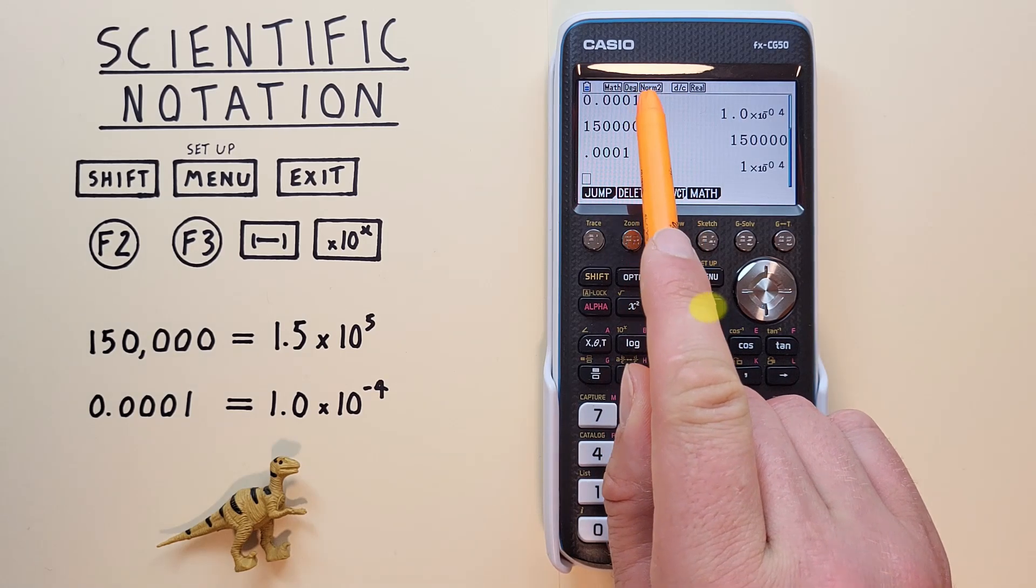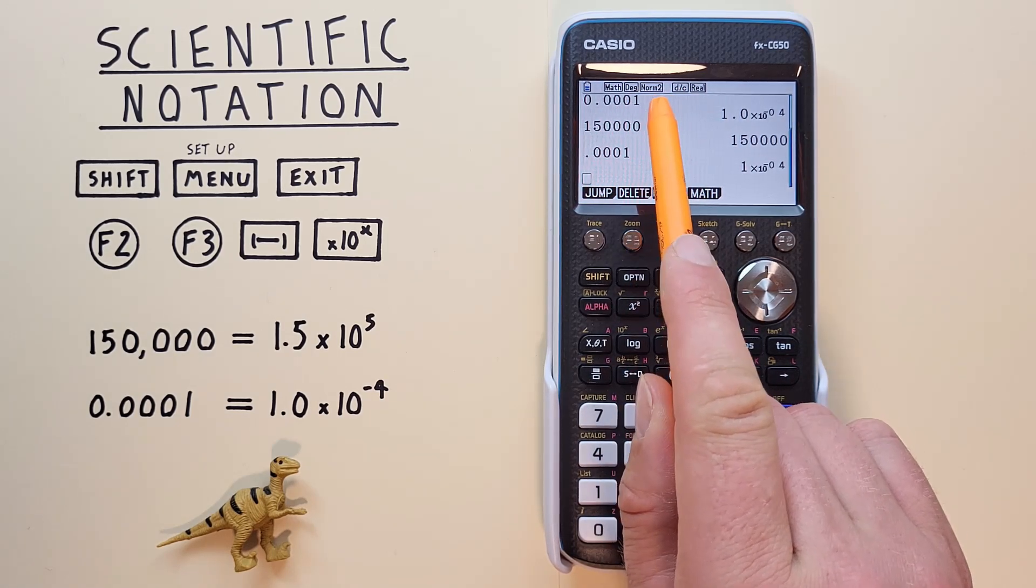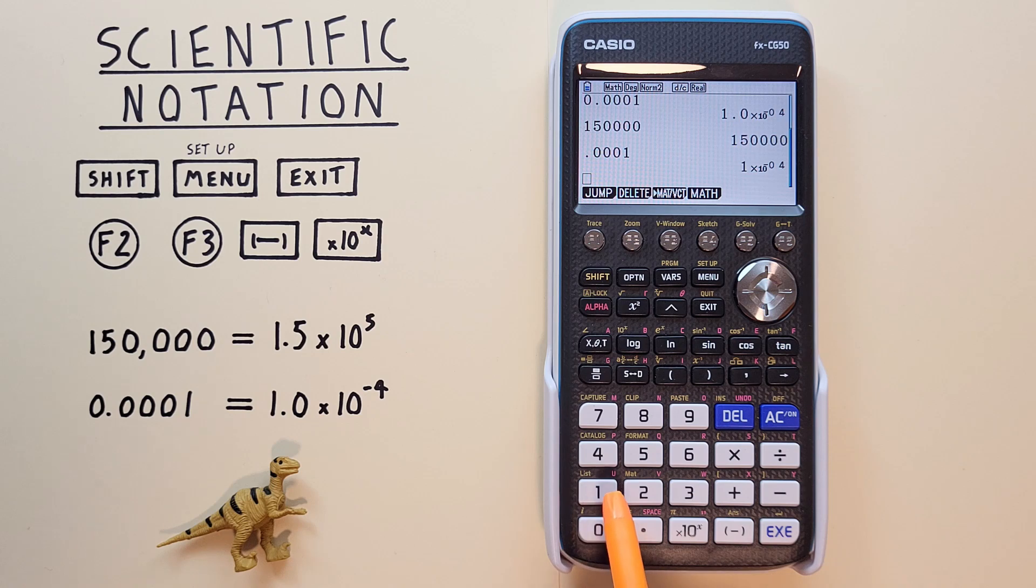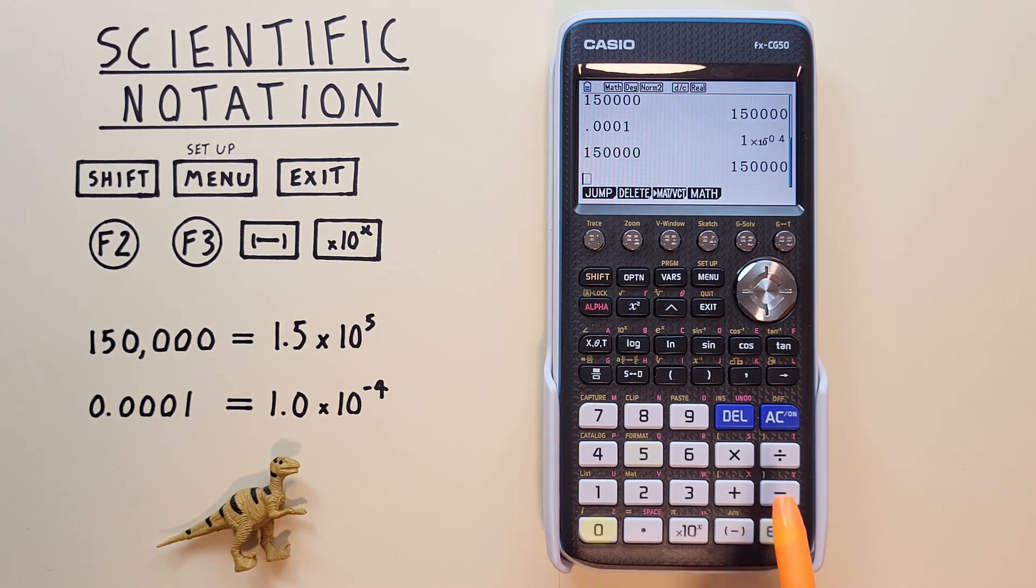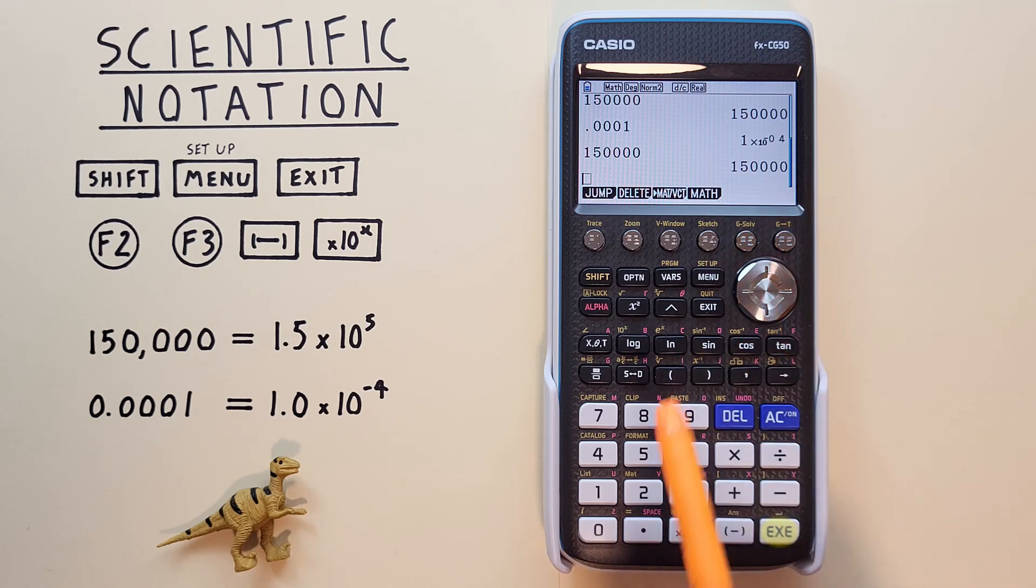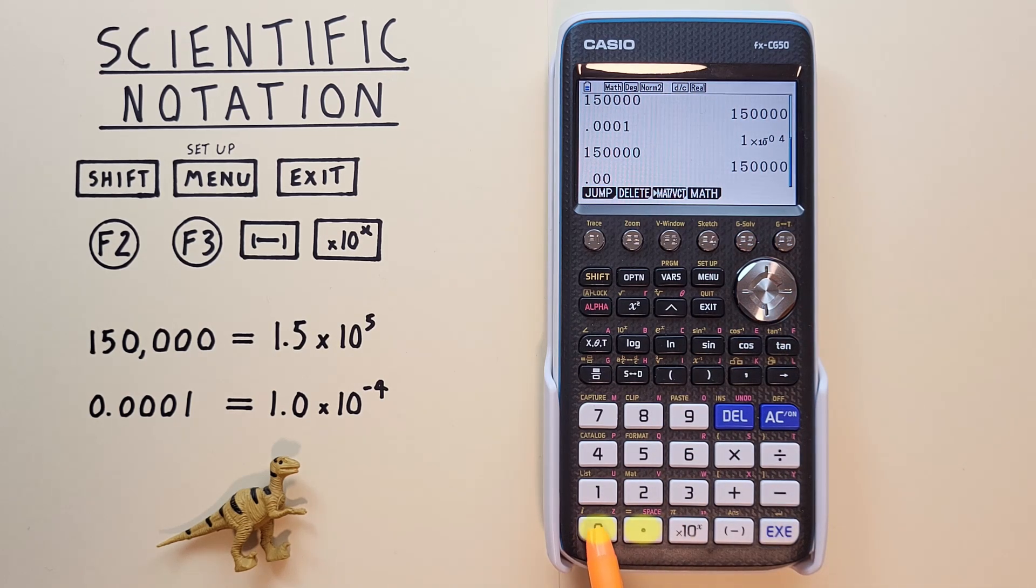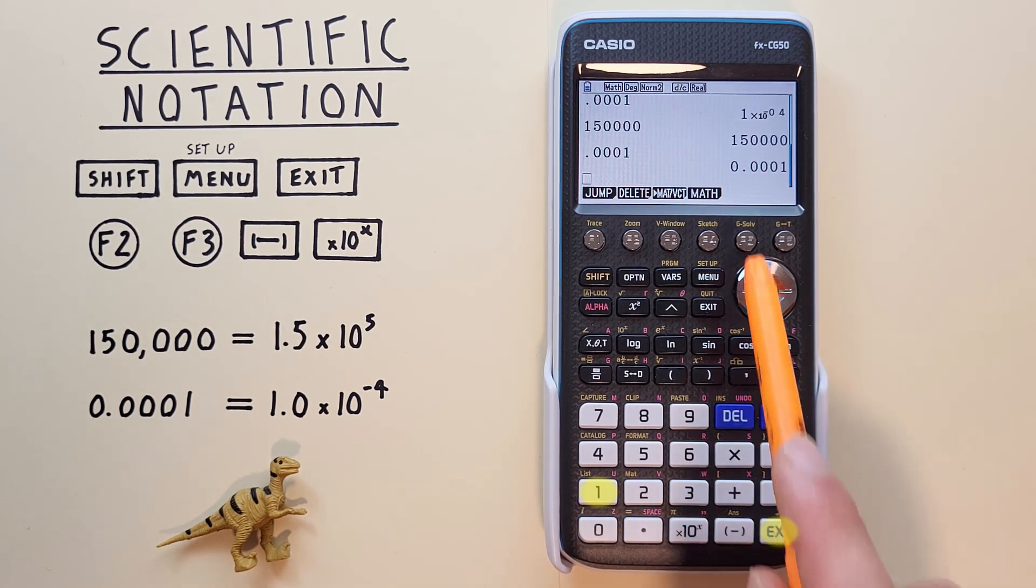Now we see Norm 2 at the top of our screen, letting us know we're in normal mode 2. If we enter the large number, we get all the digits. And if we enter the small number, we get all the digits.